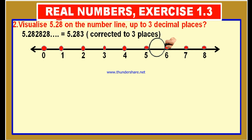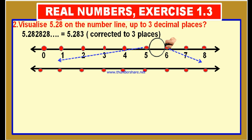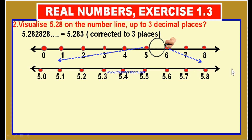Again, this is the process of magnification. We took a straight line, took points at equal distances: 5.0, 5.1, 5.2, 5.3, 5.4, 5.5, 5.6, 5.7, 5.8, 5.9, 6.0. We magnified the part between 5 and 6 and got the straight line like this. Now, 5.28 lies between 5.2 and 5.3. Therefore, this part between 5.2 and 5.3 is to be magnified.